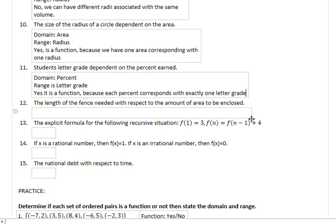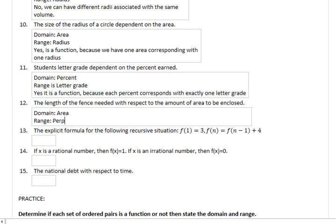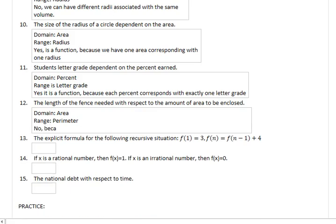The length of the fence needed with respect to the amount of area to be enclosed. Domain is the area of the place, the range is the perimeter of the fence. If we have an area that's say 12 square feet, we can have a 3x4 enclosure, we can have a 2x6 enclosure. We can have multiple perimeters associated with that area. The answer is no, because we can have multiple perimeters associated with one area.